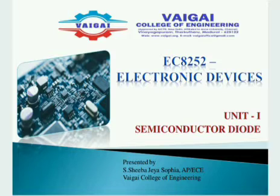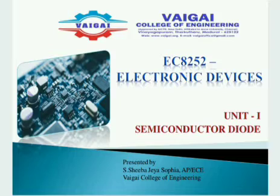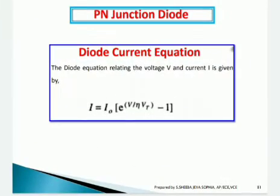Good morning students, this is Sheba. We are going to discuss electronic devices, Unit 1: Semiconductor Diodes. In our previous sessions we discussed the basics of semiconductors, basics of diodes, and pn junction diode with its operating modes and corresponding VI characteristics. In this session we are going to discuss the pn junction diode current equation and what is the need to derive this current equation.